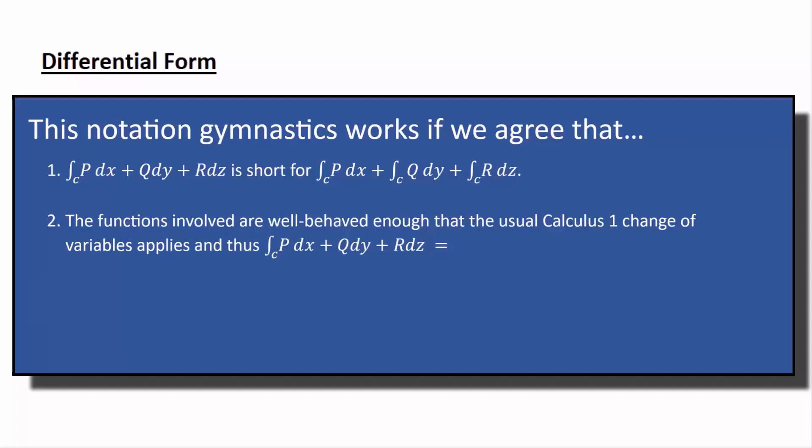equals, as we just said in number one, the integral over C p dx plus integral q dy plus integral r dz. And then if you make the substitution, we're saying in the next equality, if you put everything in terms of T, then you get the integral from A to B. Those individual integrals become the integral from A to B.